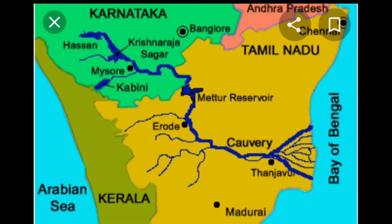And the next is the Kaveri Basin. It originates in the Brahmagiri range of the Western Ghats. Its length is about 750 km. Its main tributaries are Amravati, Bhavani, Hemavati, etc. It makes the second biggest waterfall in India, known as Shivanasamudra Waterfall.